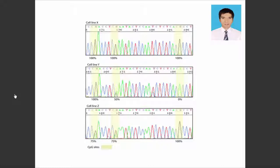Cell line X displays 100% methylation at all three CpG sites, whereas cell lines Y and Z show varying degrees of methylation, as seen by overlapping G-A signals.